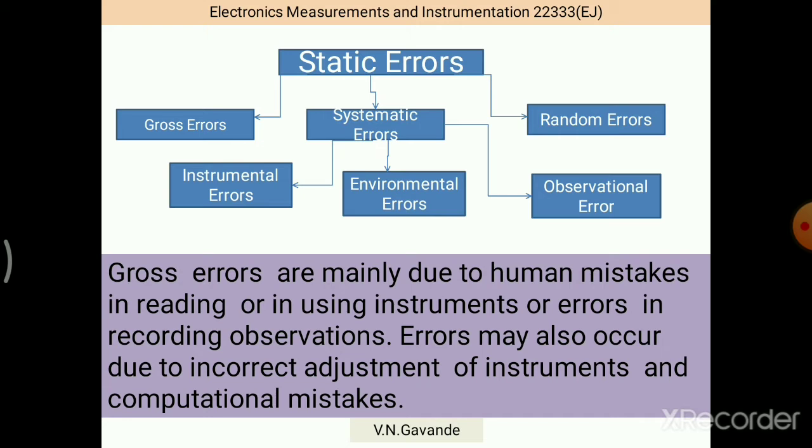Now look first at the gross errors. The word gross means bulk or lot of. And everybody knows the contributors for the errors are the human. That is why gross errors are mainly due to human mistakes in reading or in using instruments. Errors may also occur due to incorrect adjustment of instruments and computational mistakes.